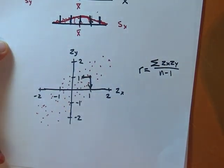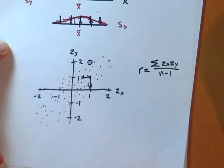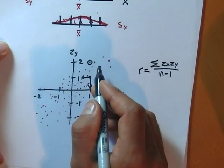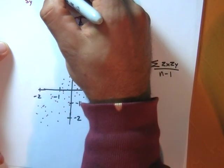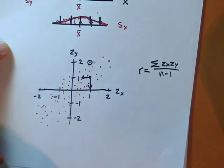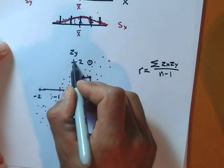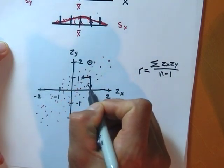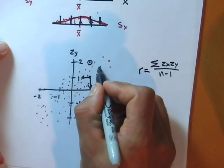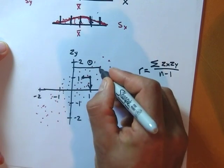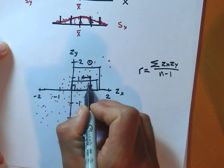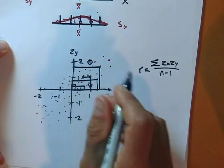If I take the point above it — z of one in x and z of two in y — it contributes one times two, which is two, the area of that rectangle. All these points in this quadrant contribute areas of rectangles. This point contributes this rectangle area, that point contributes that one. They're all contributing rectangle areas, and they're all positive.